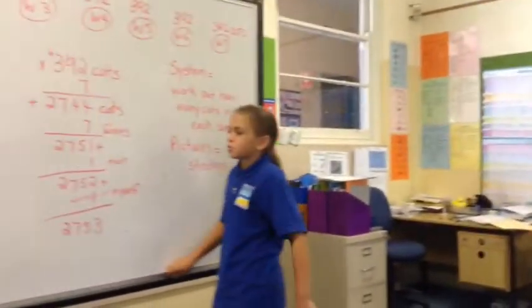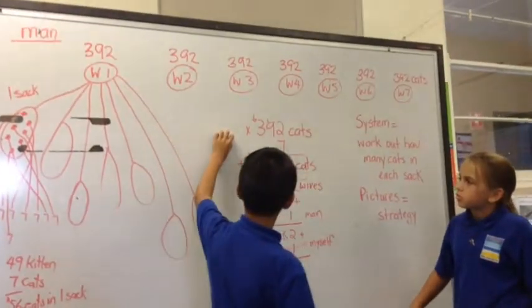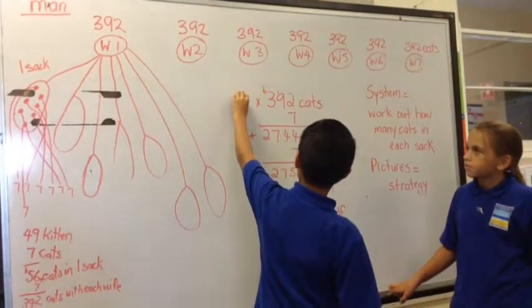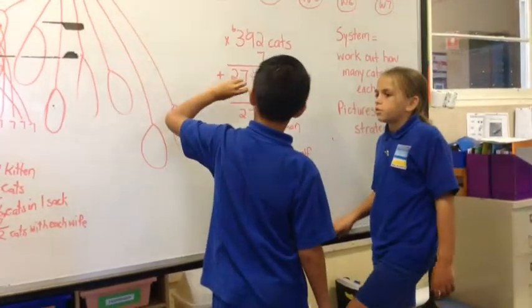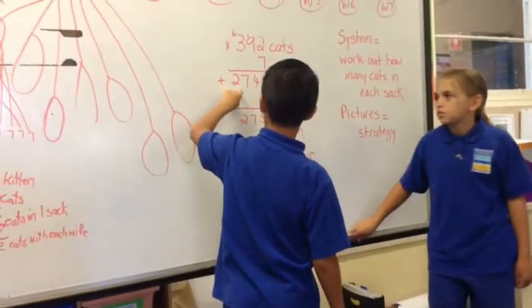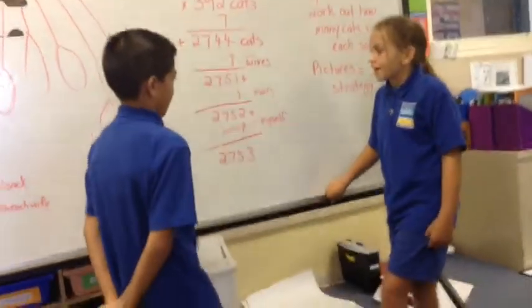And we have 392 cats times seven, which equaled a total of 2744 cats.